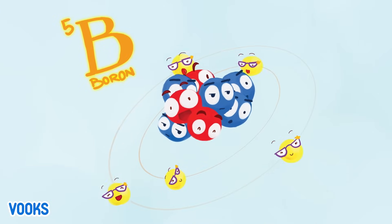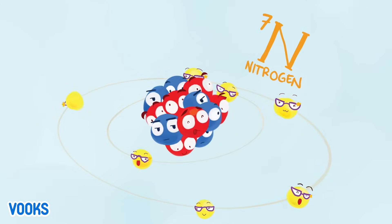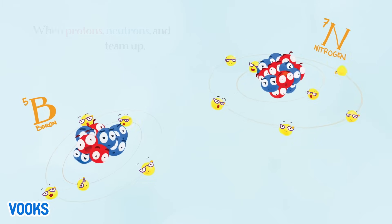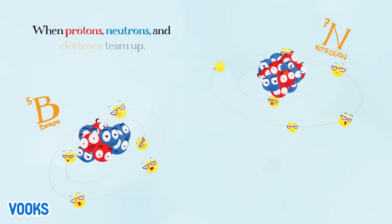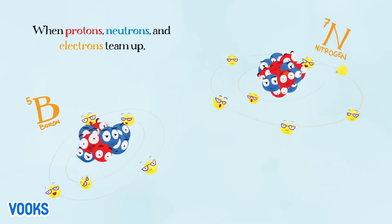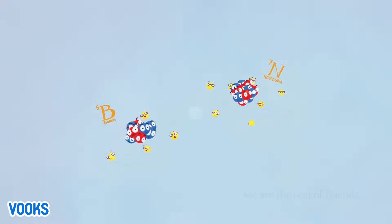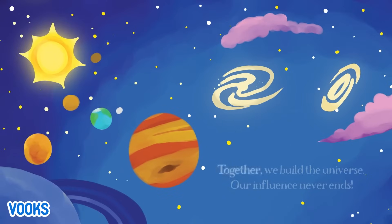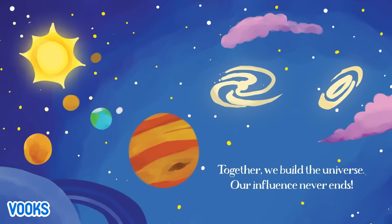I'm attracted to electrons — our charges are equal and opposite. Ned is unaffected, but my attraction is quite passionate. BFF — best friends forever. B, Boron. N, Nitrogen. When protons, neutrons, and electrons team up, we are the best of friends. Together we build the universe; our influence never ends.